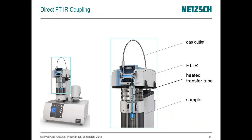The direct coupling is similar but a little different. The FTIR spectrometer sits on top of the furnace outlet with only a very short transfer line — around 10 centimeters — limiting the volume and reducing the condensation possibility. Nevertheless, this short section must still be heated in the same way as the furnace outlet and the FTIR cell.